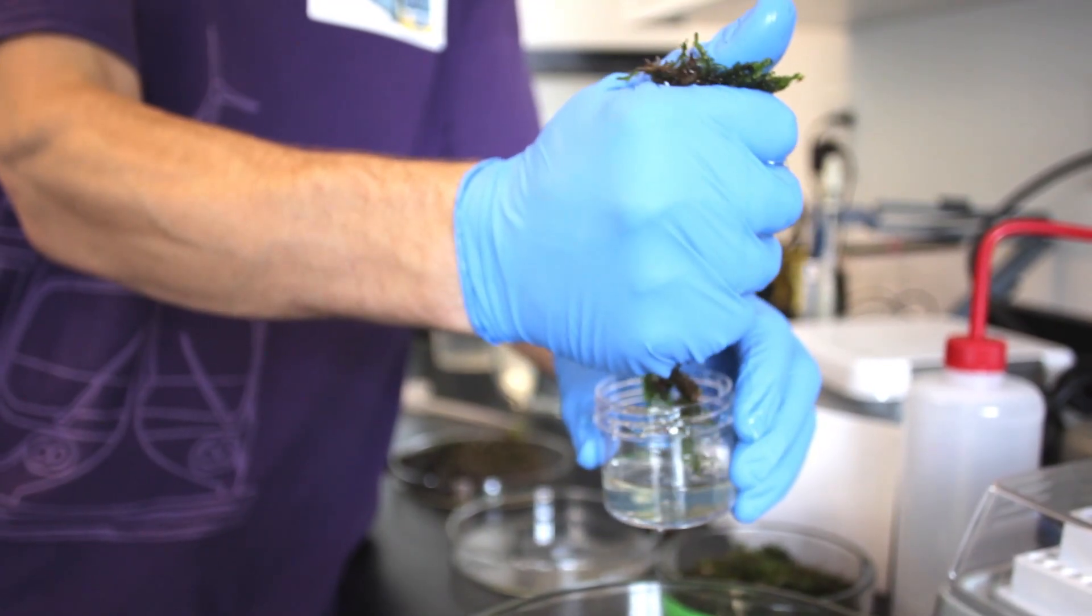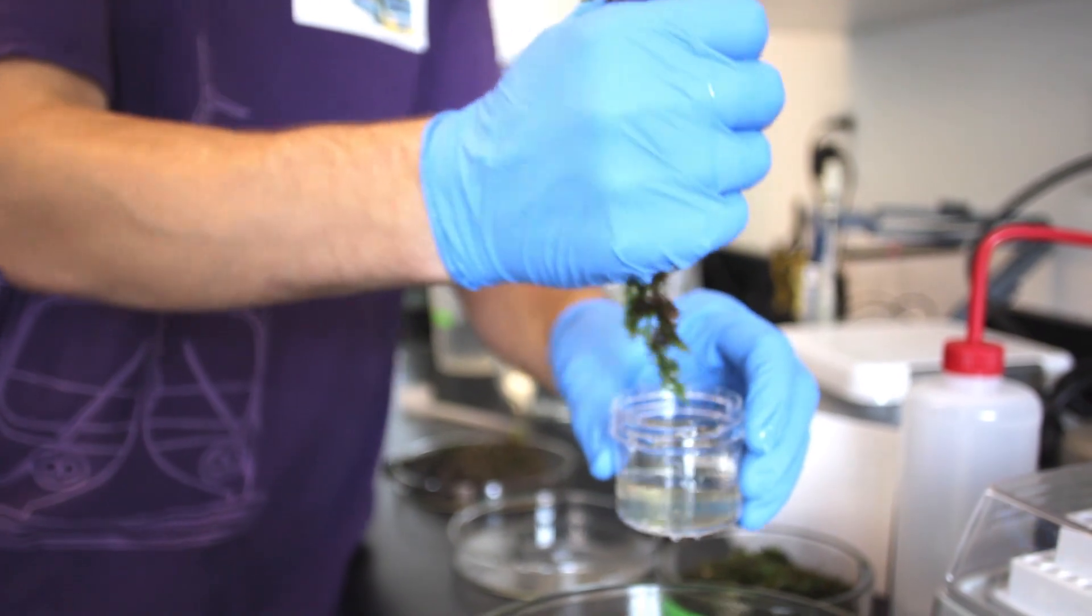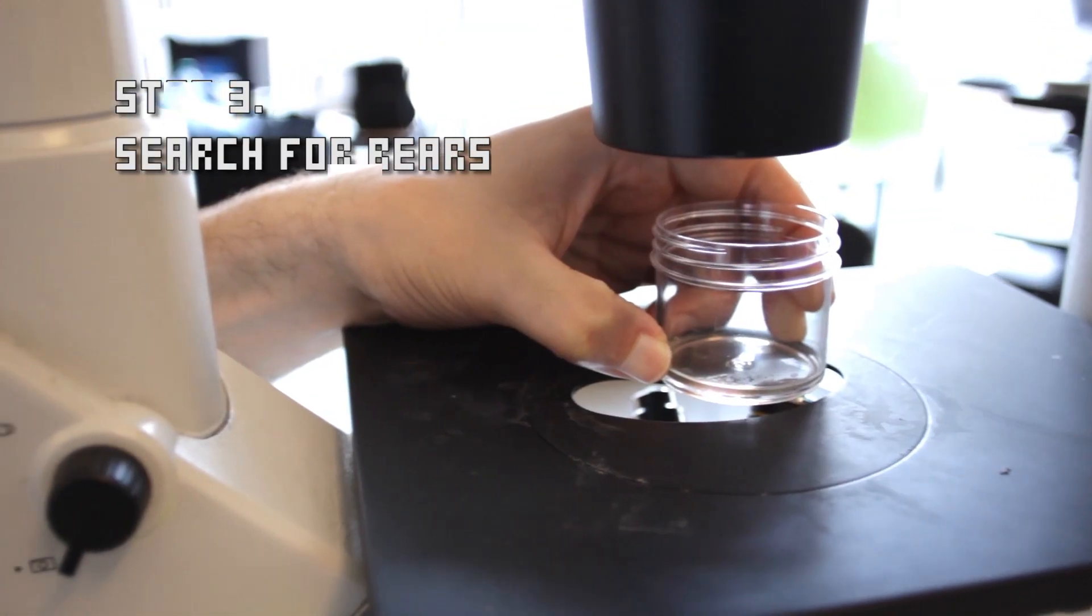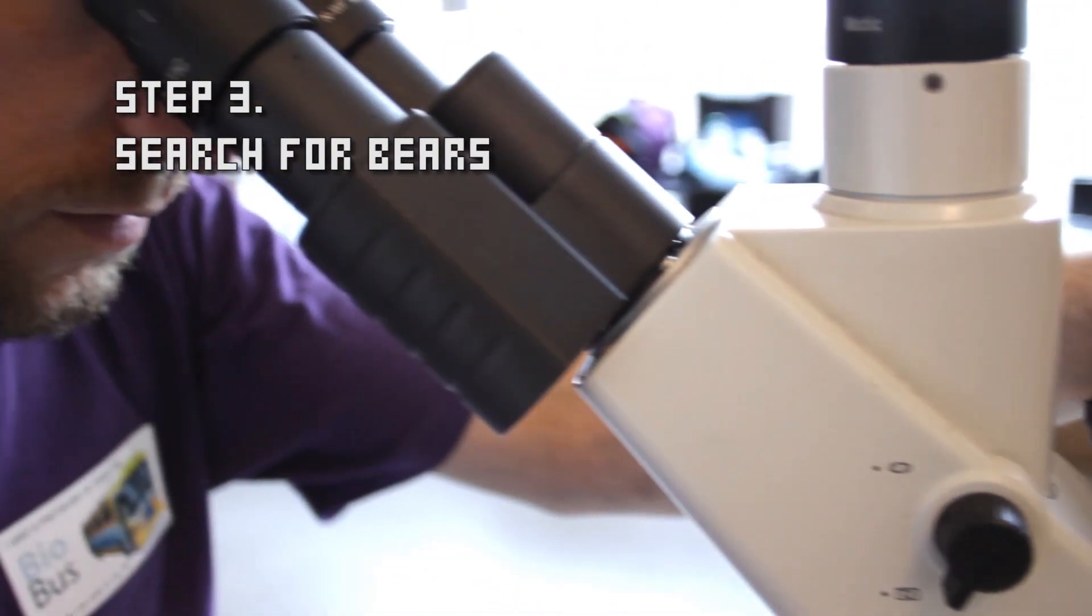So now we grab the moss and we squeeze it out into another container. If there's any water bears or other creatures in there, they'll fall out with the water. And now we're on the hunt for those water bears.